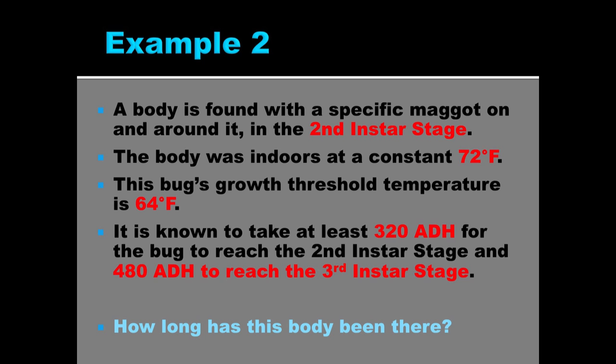So let's look at example two. A body is found with a specific maggot on and around it in the second instar stage. And that is simply its second stage of growth. The body was indoors at a constant 72 degrees Fahrenheit. Well, that's convenient. We don't have to worry about taking an average temperature or worrying about highs and lows.